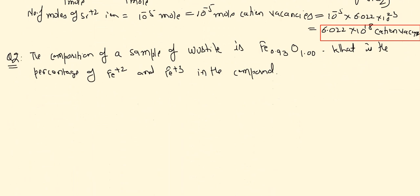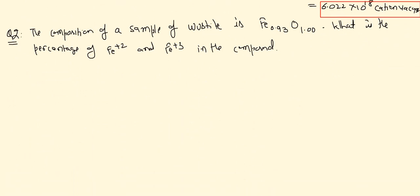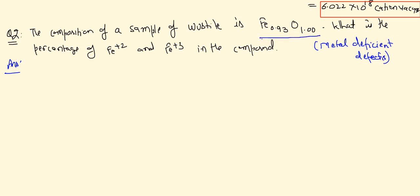This was the first numerical. The second numerical is related to metal deficient defects. The formula of FeO is basically Fe₀.₉₃O₁.₀₀, where the amount of Fe is only 0.93, meaning the number of cations is less than expected — showing metal deficient defects.